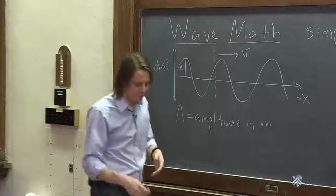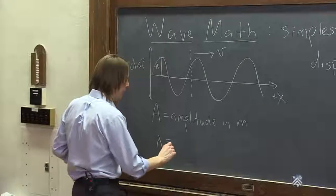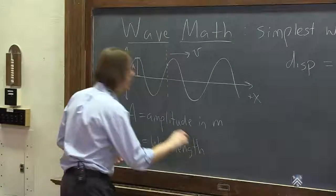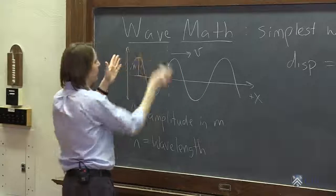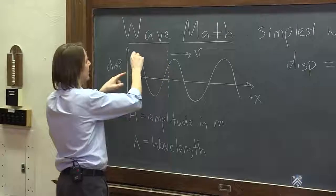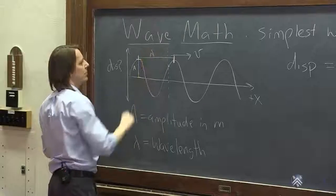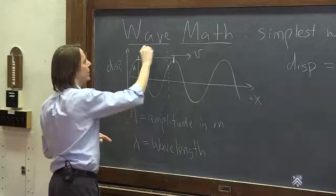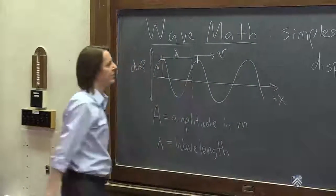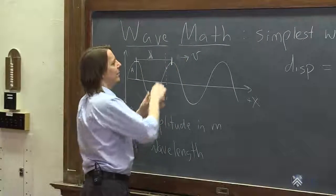Another property is the wavelength — that's this lambda, the Greek letter lambda. That is the length of a single disturbance. Since it's a repeating pattern, you just ask how far does it go before it repeats — that's lambda. So lambda goes from here to here on the wave. The wavelength is a distance, and since this is an x-axis, it's that distance along x.